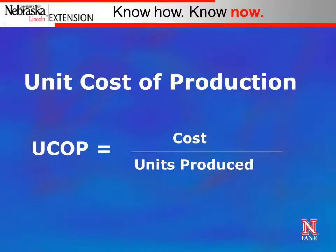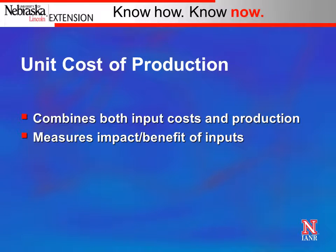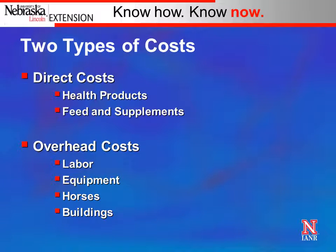Unit cost production is simply a ratio — costs in the numerator divided by units produced, in this case pounds of weaned calf. The value of unit cost of production is that it combines both input costs and production, measures the impact of inputs, and shows their benefit. It really helps us understand: if we're spending a dollar, what are we getting back in terms of product produced?